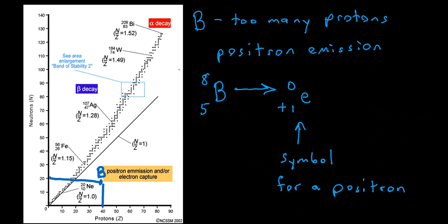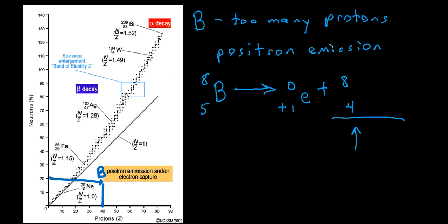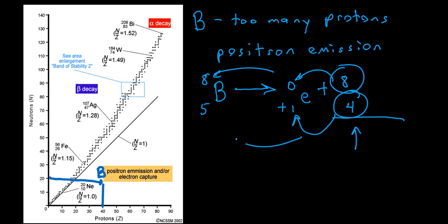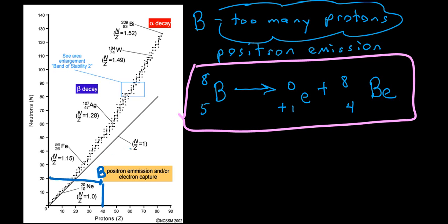An example of positron emission would be the isotope boron-8. The symbol plus one zero with an e represents the positron being emitted. The new element that forms has mass number 8 (8 plus 0 equals 8), and atomic number 4 (4 plus 1 equals 5). The new element produced is beryllium. This is positron emission — the radiation resulting from too many protons — occurring when a nucleus plots below and to the right of the band of stability.